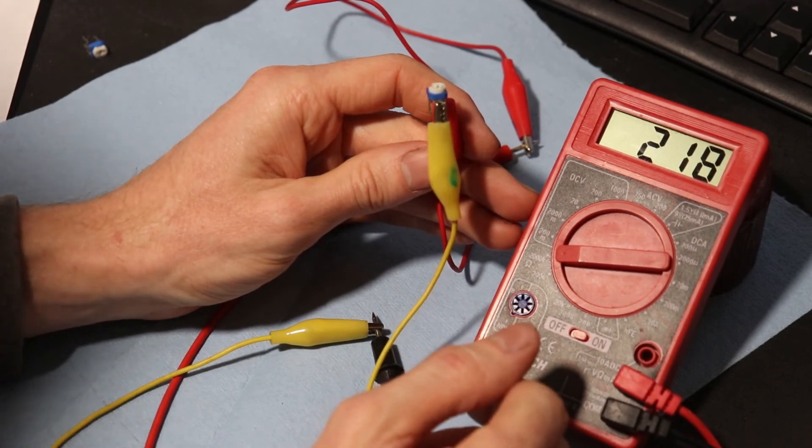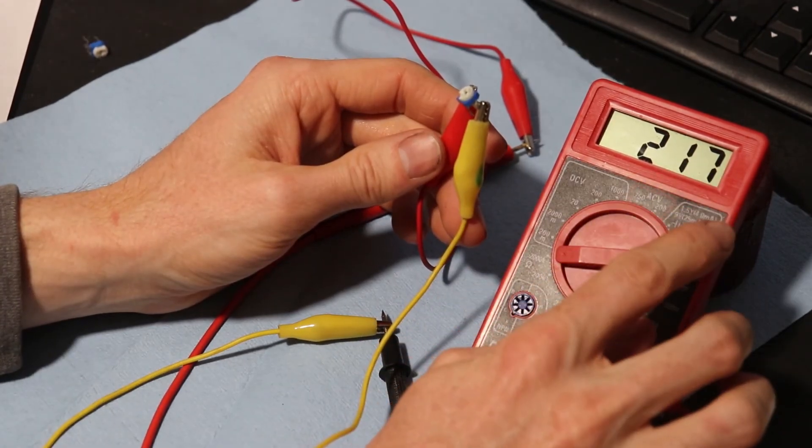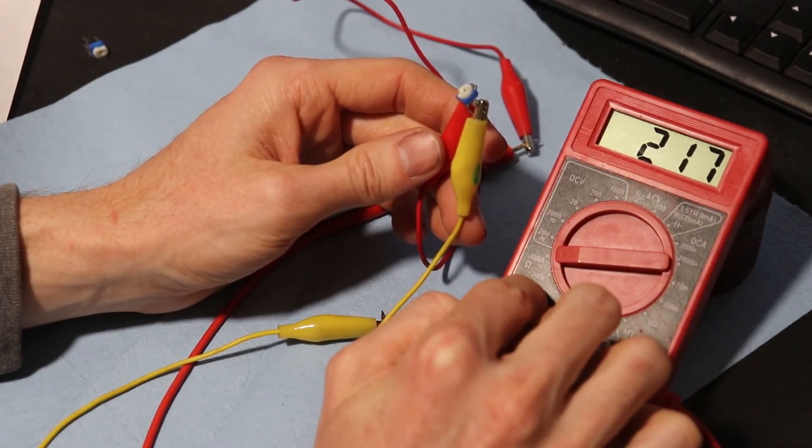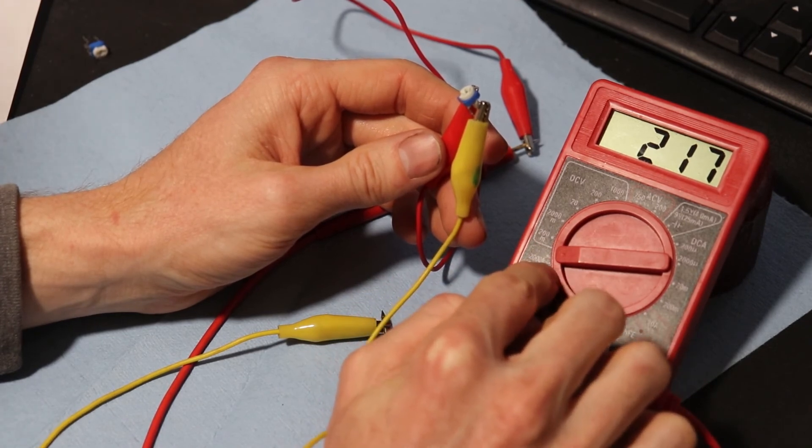So since this is 217,000, it's just outside of the 200k range. We had to go all the way up to 2,000k.